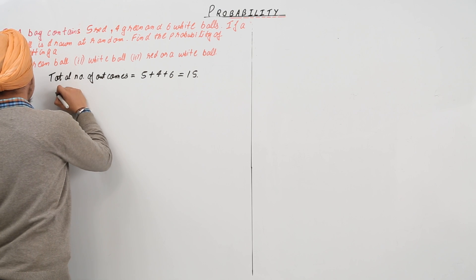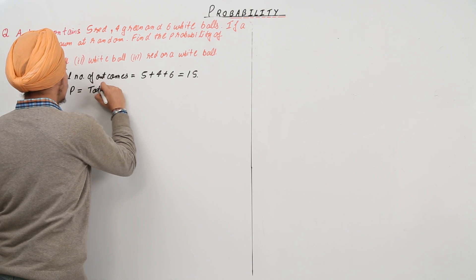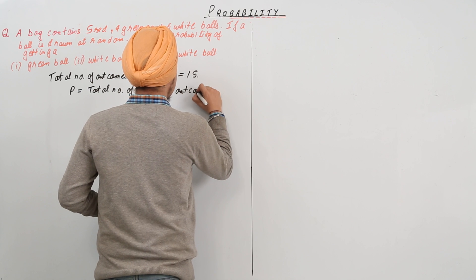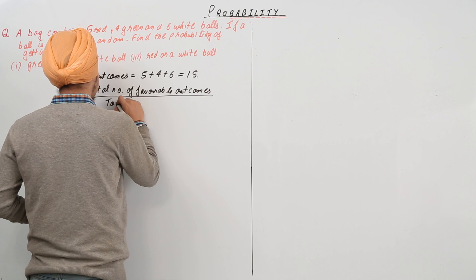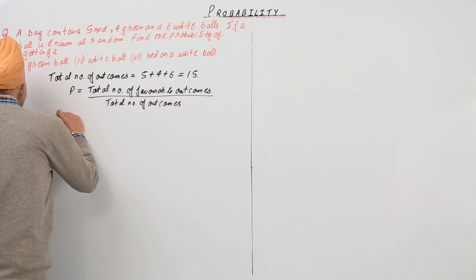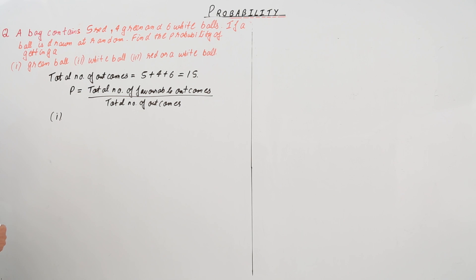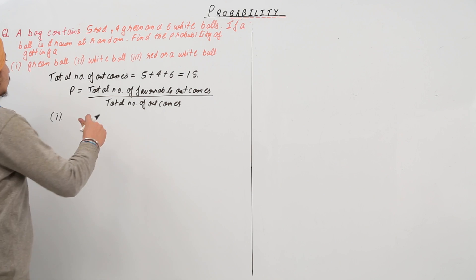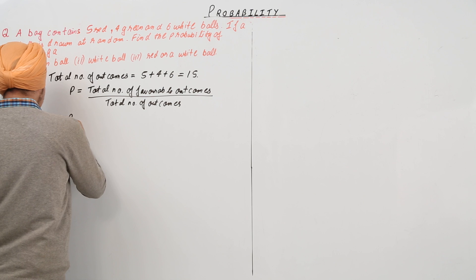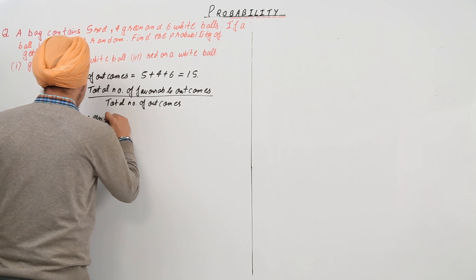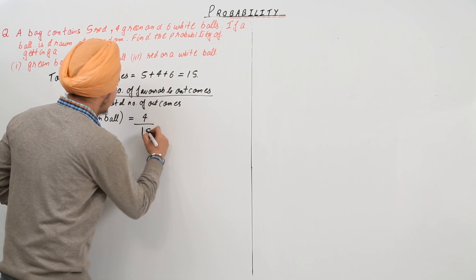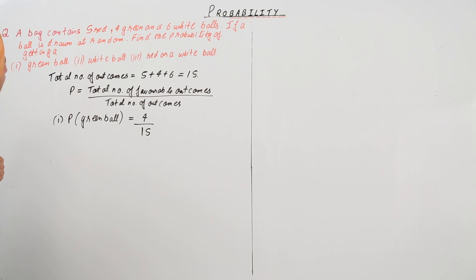Now we start with the formula for probability. Probability is equal to total number of favorable outcomes upon total number of outcomes. Starting with the first part, we have to find the probability of getting a green ball. There are 4 green balls, so the total number of favorable outcomes are 4. So the probability of getting a green ball is 4 by 15.